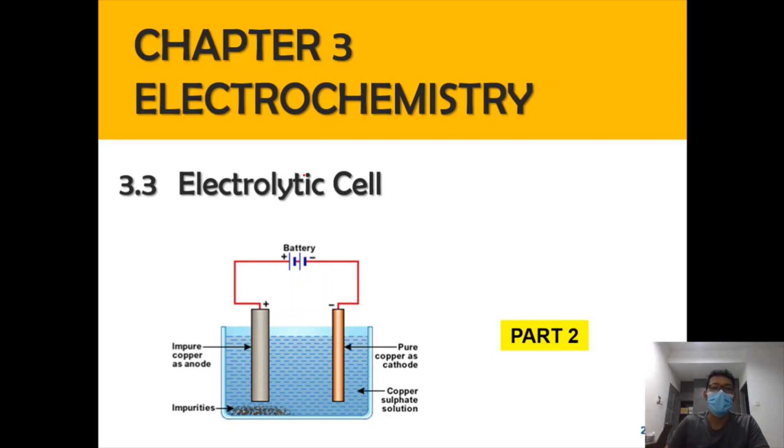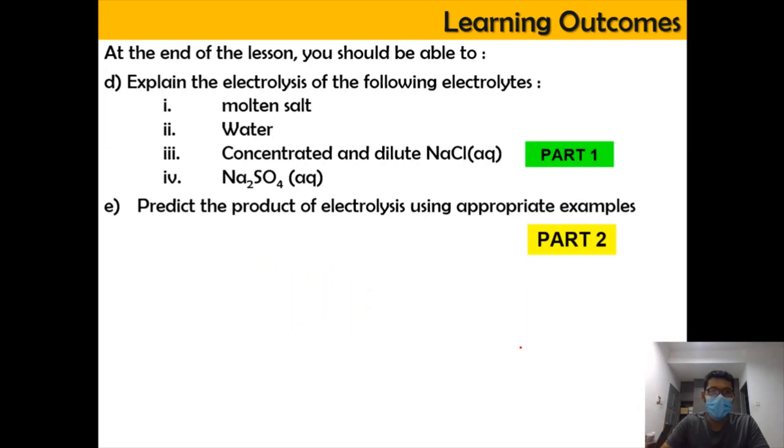Hi, Assalamualaikum and a very good morning. So now we are on Chapter 3, Electrochemistry, focusing on the subtopic of 3.3 Electrolytic Cell, Part 2 of this video. In this video, we're going to learn how to explain and predict the product of electrolysis according to these three situations: first is the molten state, second is water, and number four is the sodium sulfate aqueous.